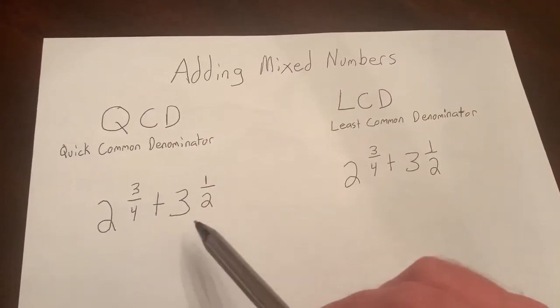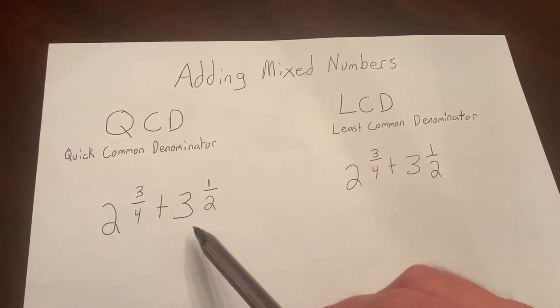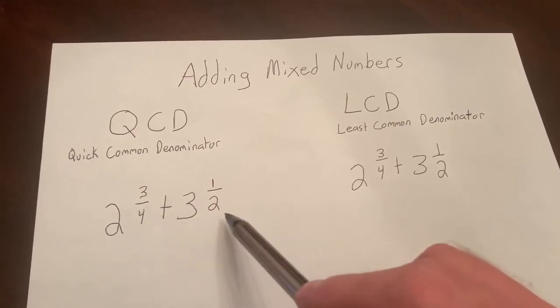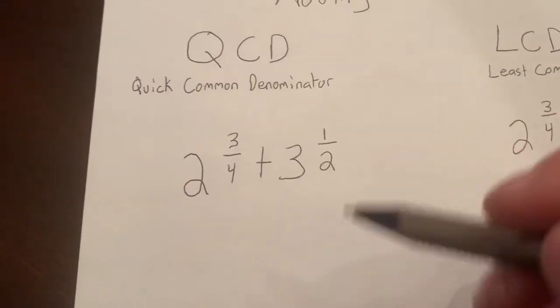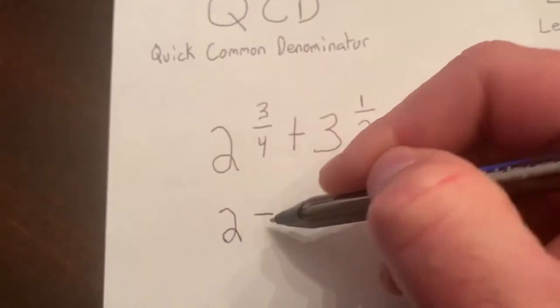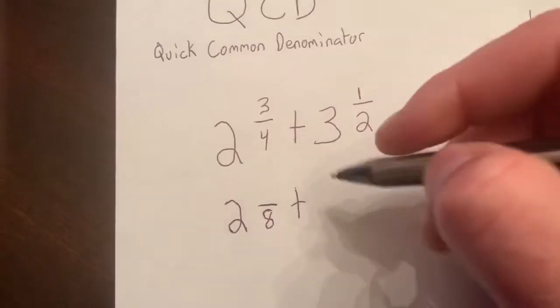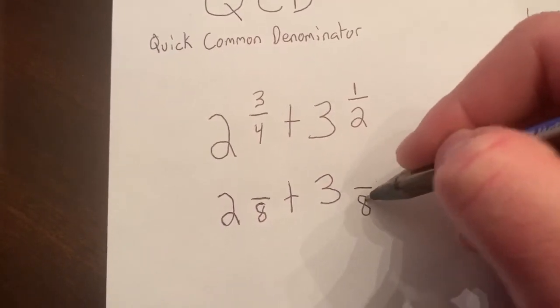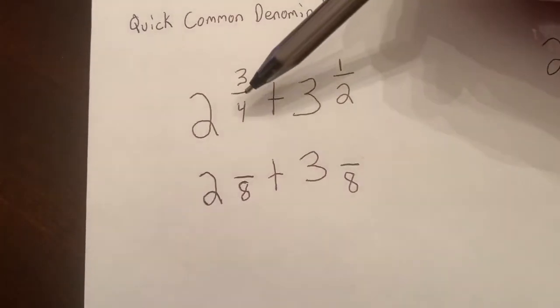When thinking about adding mixed numbers with unlike denominators, we need to find a common denominator. So QCD: you can do 4 times 2, multiply the denominators, so our new denominator is 8. So I write 2 and something over 8 add 3 and something over 8.